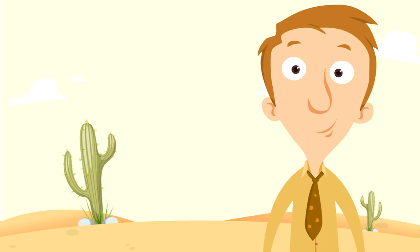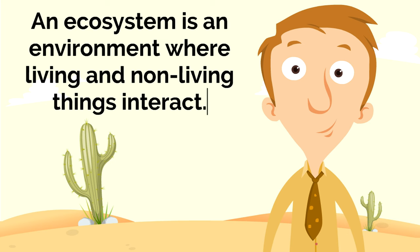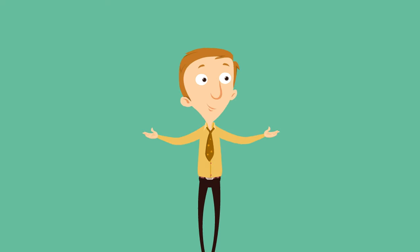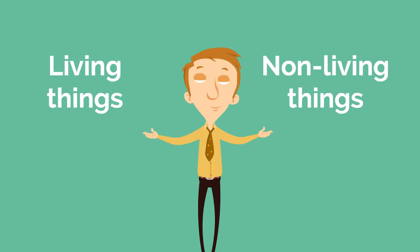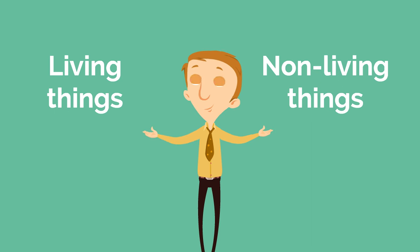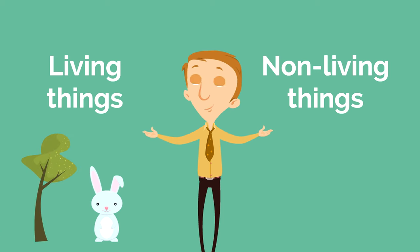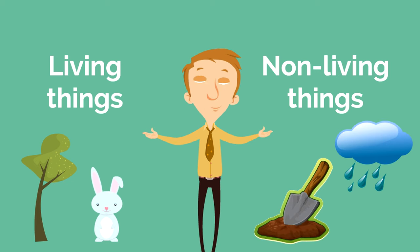So what is an ecosystem? An ecosystem is an environment where living and non-living things interact. Living things like animals and plants interact with non-living things like the weather and soil — together they make up a very special place called an ecosystem.